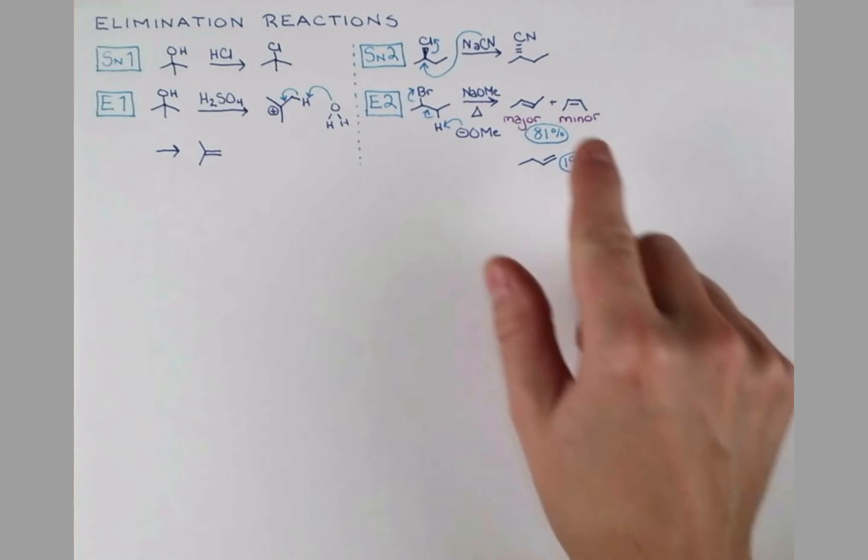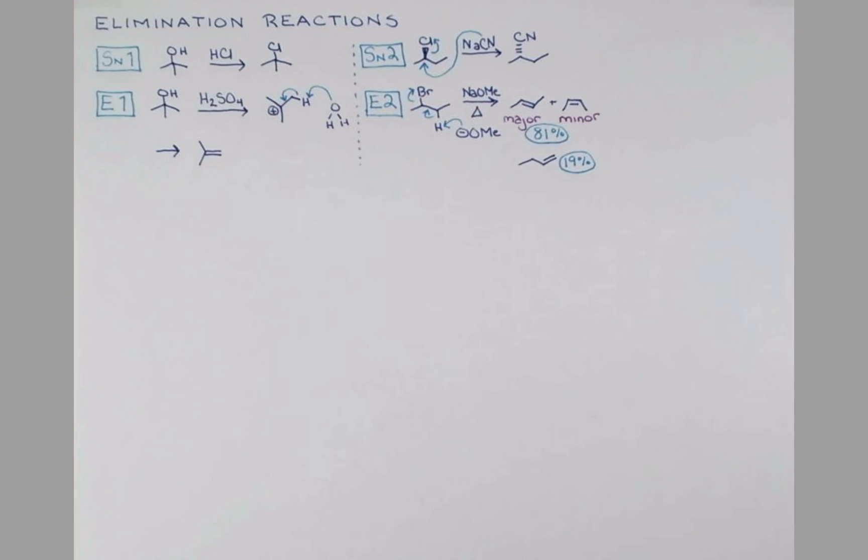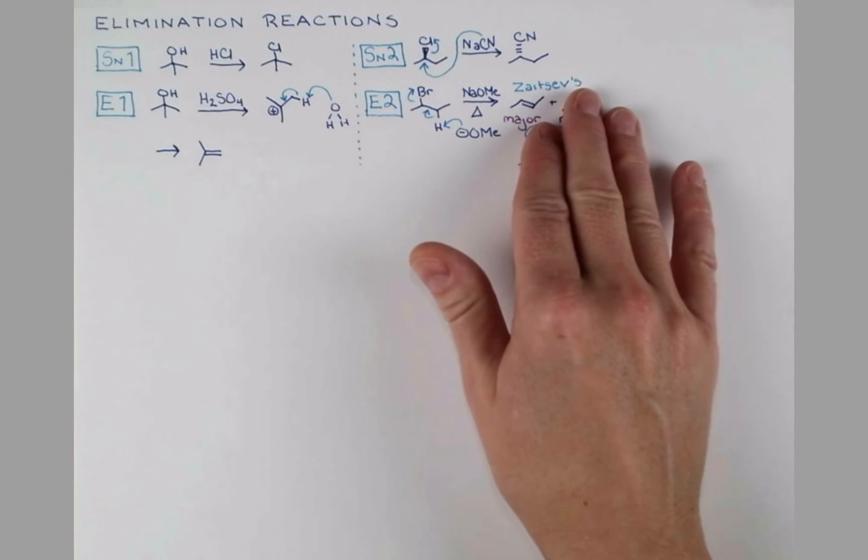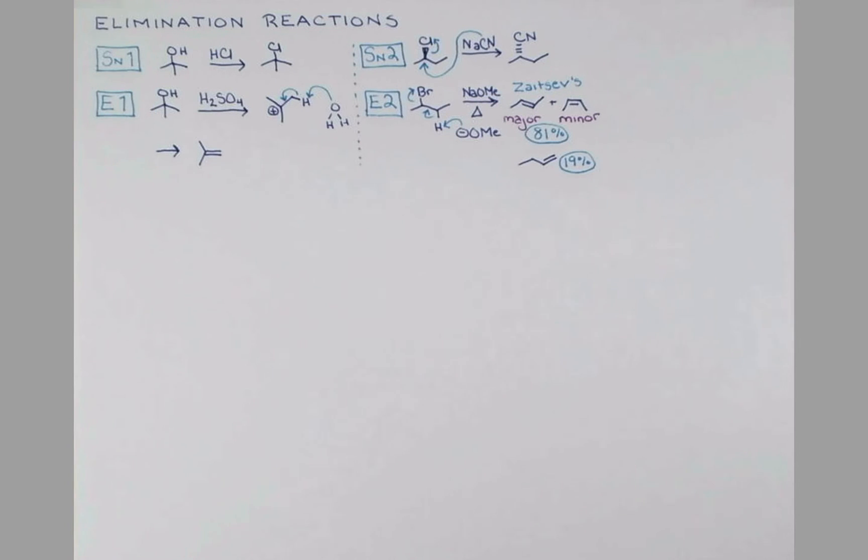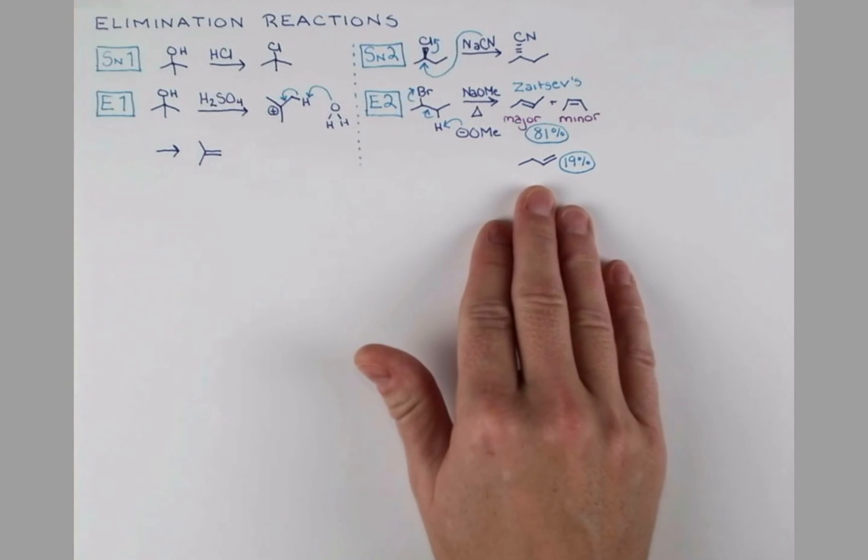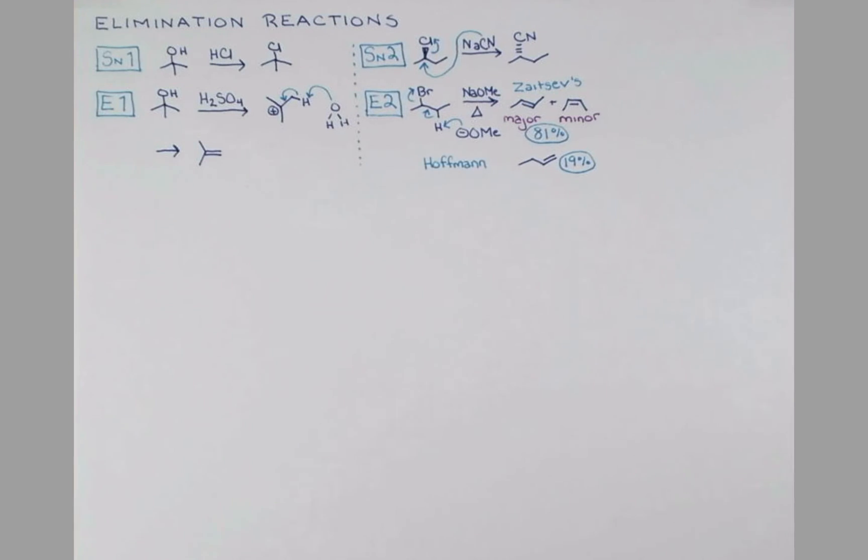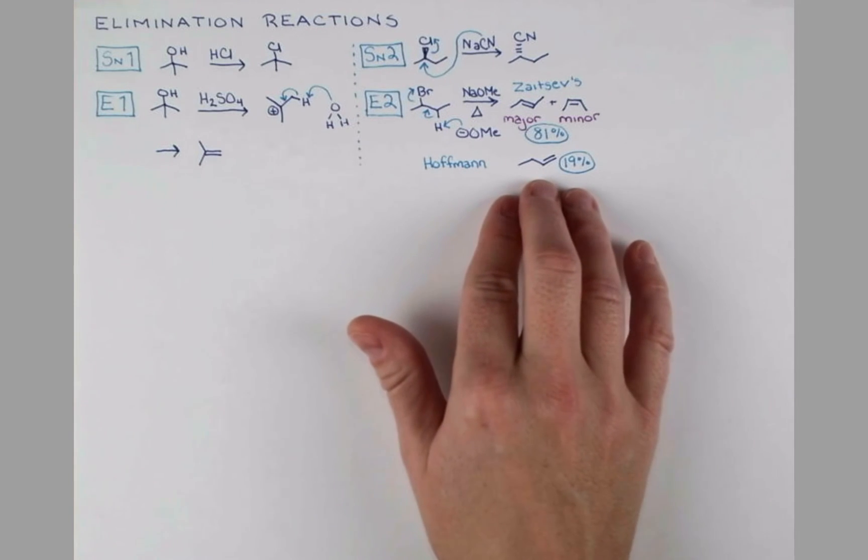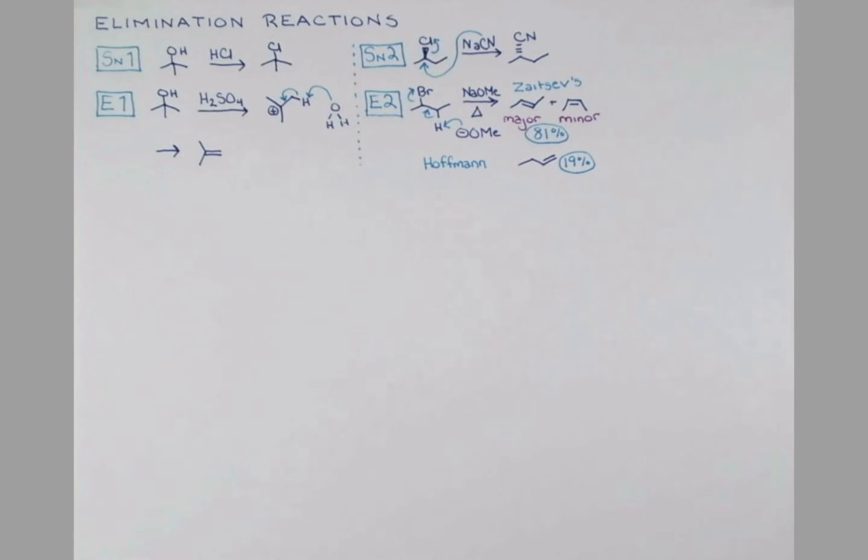Whereas in these alkenes, we have one alkyl group sticking off of each side, and then one hydrogen. So these have two substituents coming off of the alkene, whereas this just has the one. The propensity to form the more substituted alkenes as the major product is referred to as Zaitsev's rule. You may see this spelled a few different ways, maybe with an S here. That is because the name is originally Russian, so this is our attempt to translate it into Latin characters. This less substituted product is sometimes referred to as the Hoffman product.